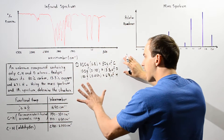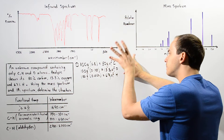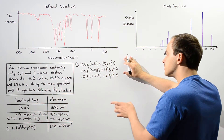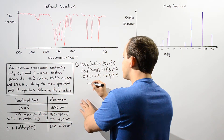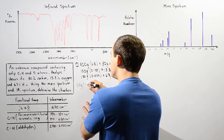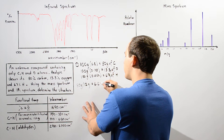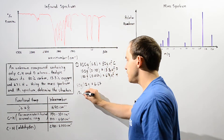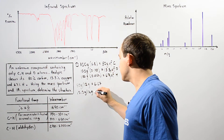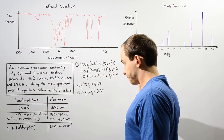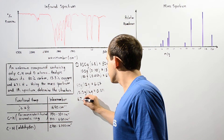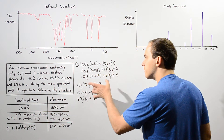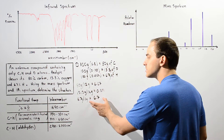Finally, 100 grams multiplied by 0.067 gives us 6.7 grams of H. So out of 100 grams, 80 grams are carbon, 13.3 grams are oxygen, and 6.7 grams are hydrogen. Now, to find what number of atoms each mass corresponds to, we take 80 grams of carbon and divide by the atomic mass of carbon — 12 grams — and find about 6.67. For oxygen, 13.3 grams divided by 16 grams gives 0.831. For hydrogen, 6.7 divided by 1 gram gives 6.7.